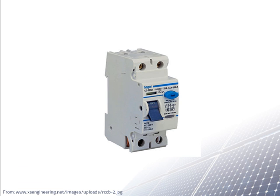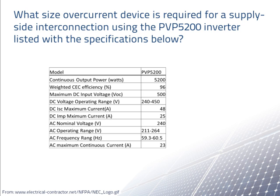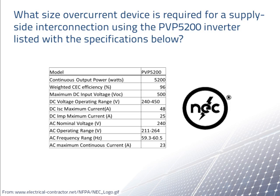An overcurrent protection device prevents conductors or devices from reaching excessively high temperatures due to very high currents by opening the circuit. In this example, we are given a specifications sheet of an inverter and shown how to size the overcurrent device according to the National Electric Code.